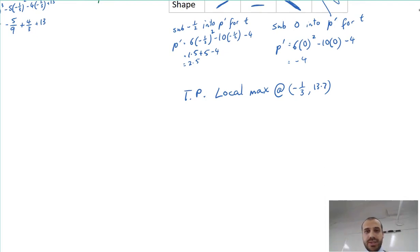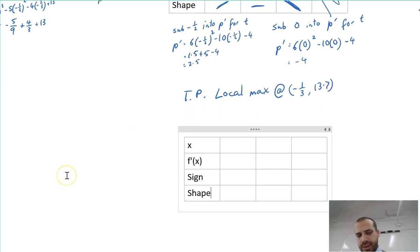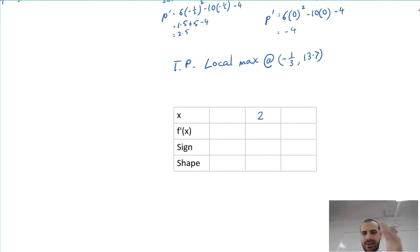Of course, that's only half of the business because I need to test that other turning point. I need another table. I'm going to put in the number 2 because 2 is the turning point at x equals 2. And I need to test to the left of that and I need to test to the right of that. I'm just going to use round numbers here, 1 and 3.